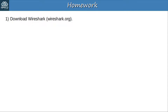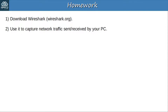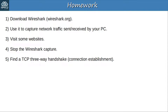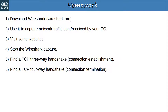Here's a little bit of homework for you to get familiar with Wireshark. First, download Wireshark from wireshark.org. Then use it to capture network traffic sent and received by your PC. Visit some websites while Wireshark is running, then stop the capture. Check out the packet captures and find a TCP 3-way handshake — a TCP connection establishment — then find a TCP 4-way handshake, a TCP connection termination. If you really want to learn how to use Wireshark, I recommend checking out David Bomble's free videos on YouTube or getting his Wireshark course on Udemy.